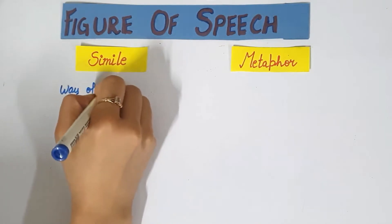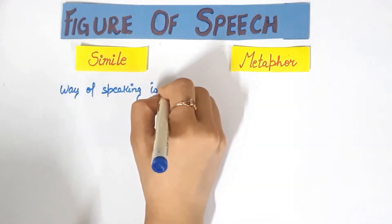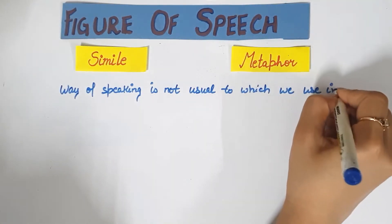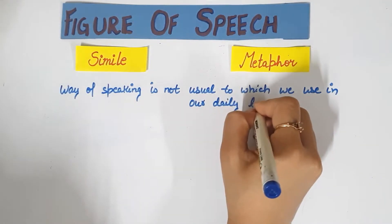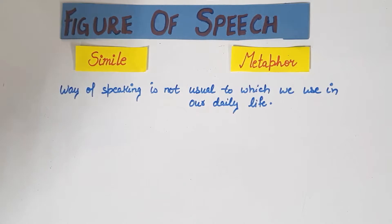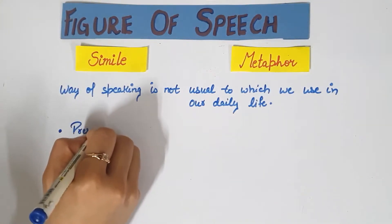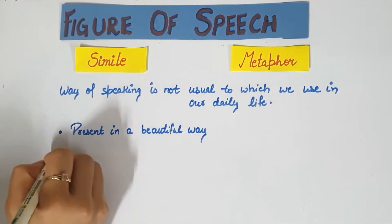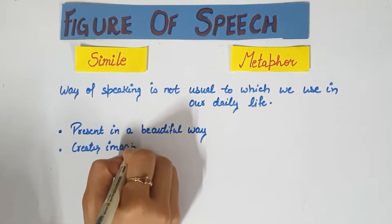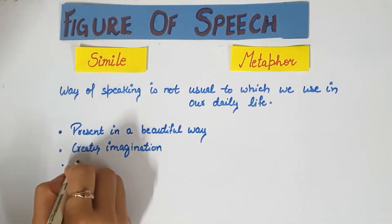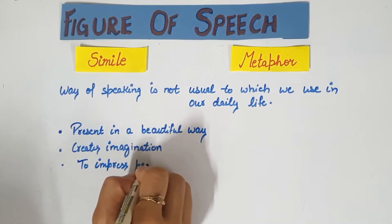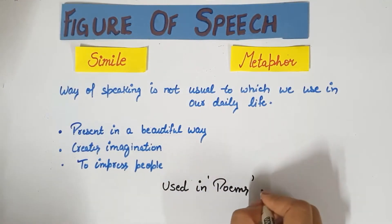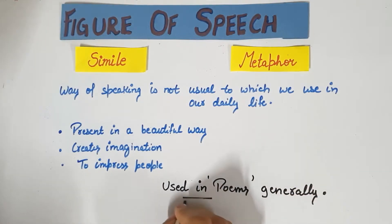So what is figure of speech? Figure of speech means a way of speaking or writing through words or phrases. But this way of speaking is not the same as what we use in our daily life. In daily life we use simple sentences, but in figure of speech we say those sentences in a very different way. But why do we use figure of speech? So that we can make a powerful impact in our sentence, present the meaning in a very beautiful way, create an imagination in the other person's mind of what we're trying to say, and impress someone by using words differently.